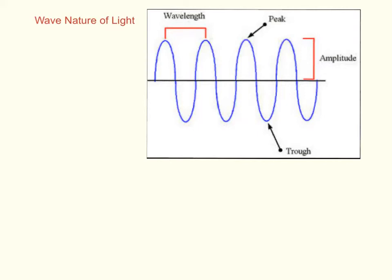We're going to talk in this chapter about atomic theory, but most of the discoveries in atomic theory came through looking at light. Just a reminder of things that travel as waves: they have a wavelength. The abbreviation for that is the Greek letter lambda, and that's just the distance between two peaks.